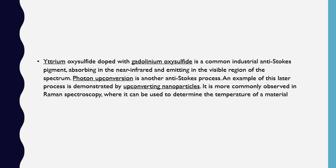Here is an example: yttrium oxysulfide doped with gadolinium oxysulfide is a common industrial anti-Stokes pigment. It absorbs in the near-infrared and emits in the visible region — meaning it absorbs higher wavelength or lower energy and gives you higher energy or lower wavelength output. Photon upconversion is another anti-Stokes process, demonstrated by upconverting nanoparticles. It is more commonly observed in Raman spectroscopy, where it can be used to determine the temperature of a material.